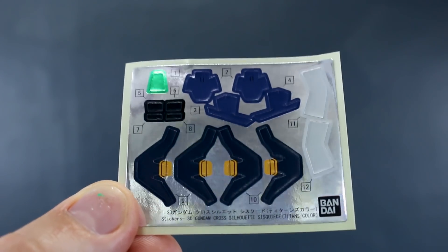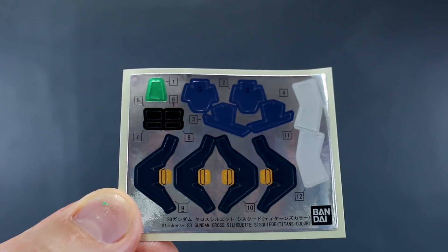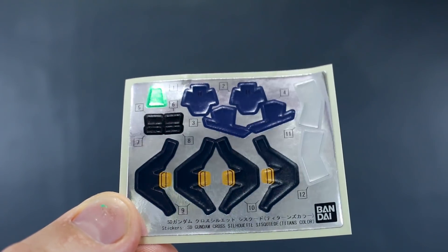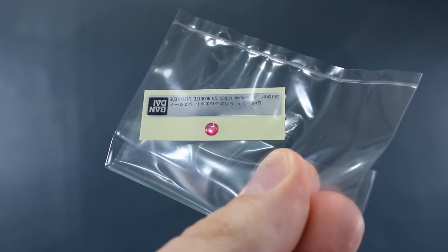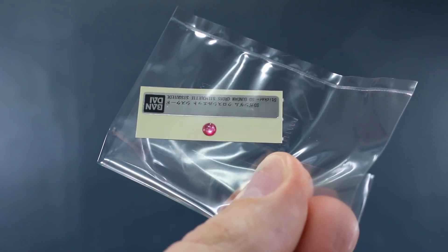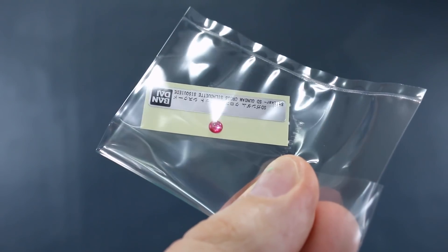But just a few stickers on here, a few white, a few dark blue, one little green one there for the head camera. And that's pretty much it. And here's what you get for the mono eye. You get this nice clear pink circular half-circle gem sticker there to go on there for the mono eye.